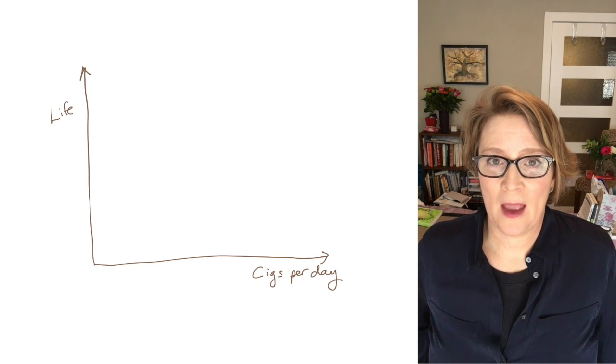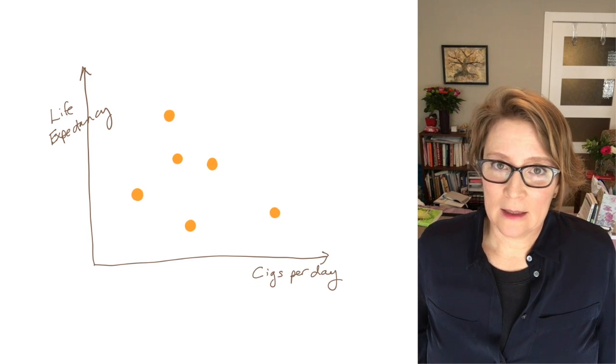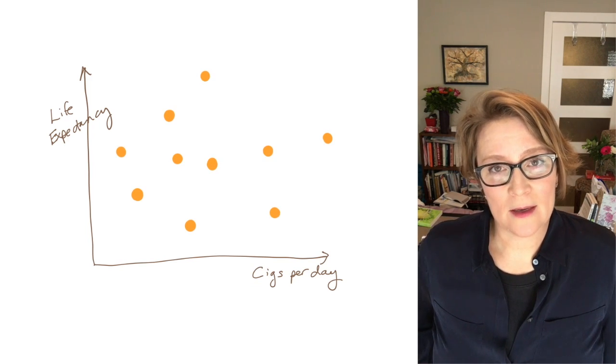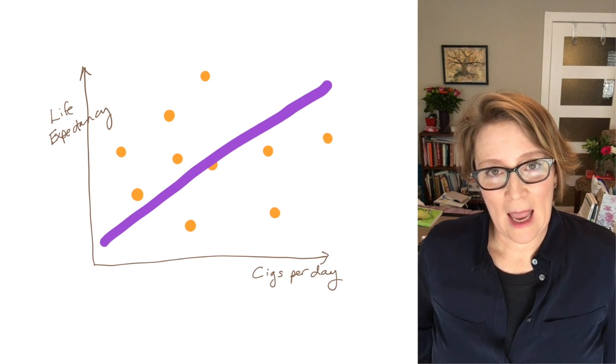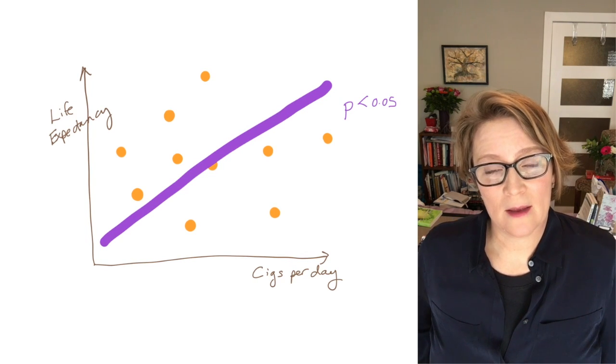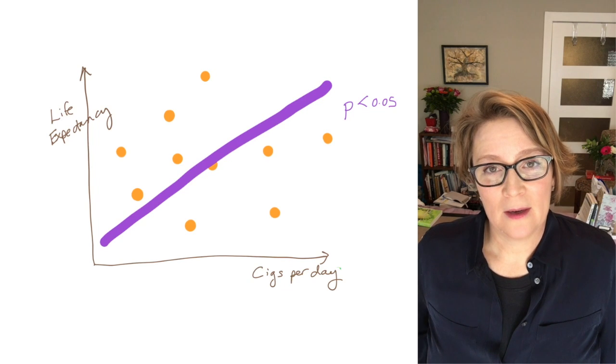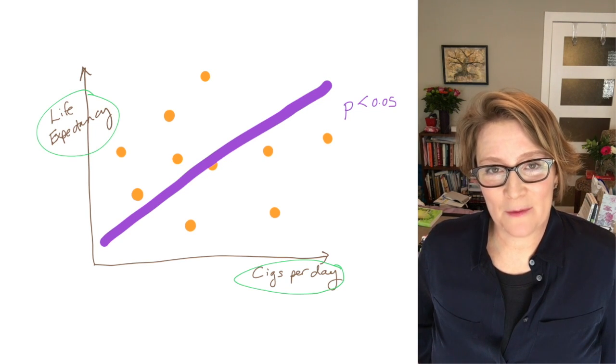And we can plot the countries within those axes and a really lovely trend emerges, and it's a statistically significant trend, and we can see that higher cigarette consumption is associated with higher life expectancy. Statistically significant, really nice plot.